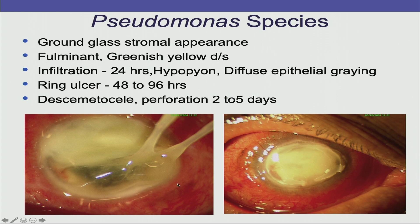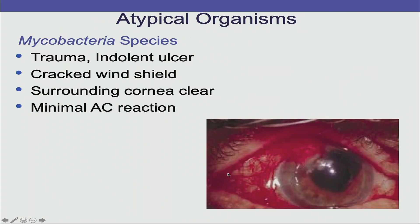If there is a ground-glass stromal appearance, it is fulminant with greenish-yellow discharge, infiltration occurs in 24 hours, ring ulcer in 48 hours, and descemetocele or perforation within 2 to 5 days — then it is most likely a Pseudomonas ulcer.